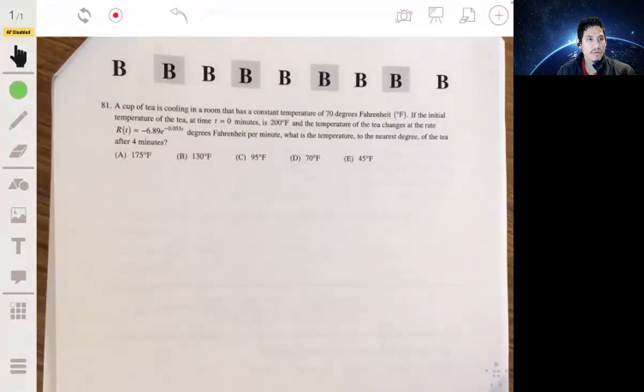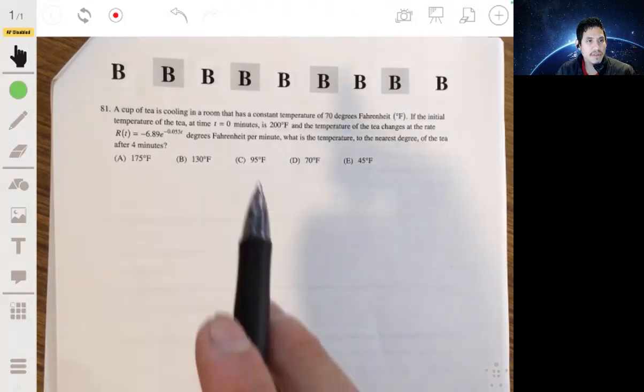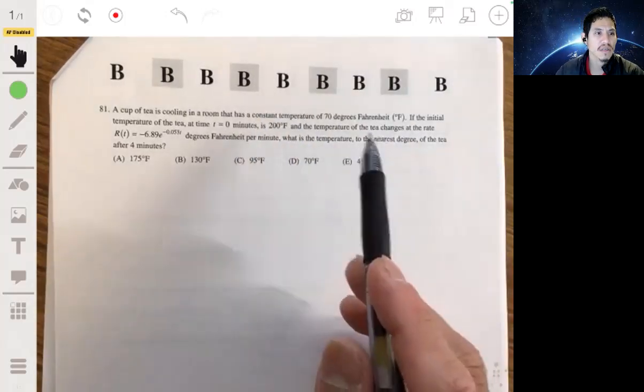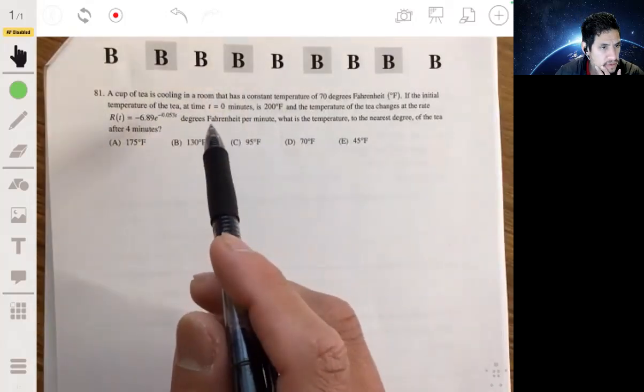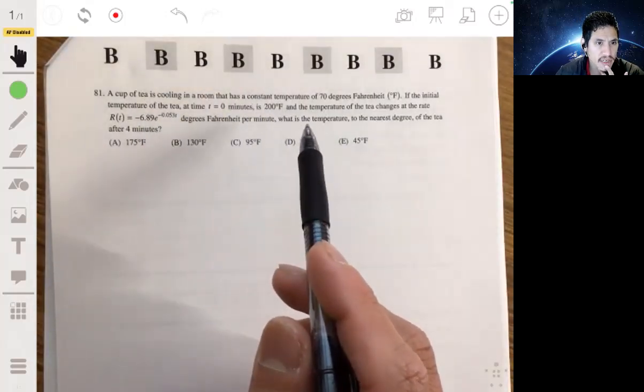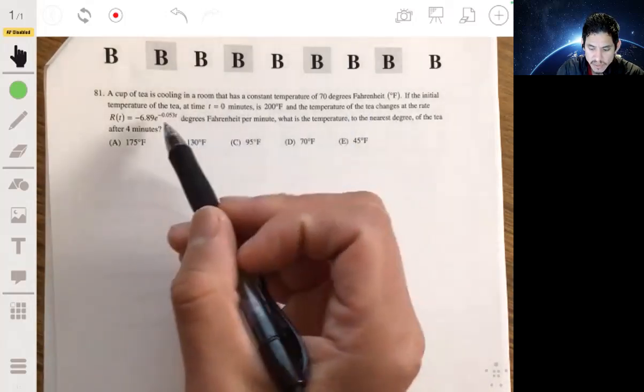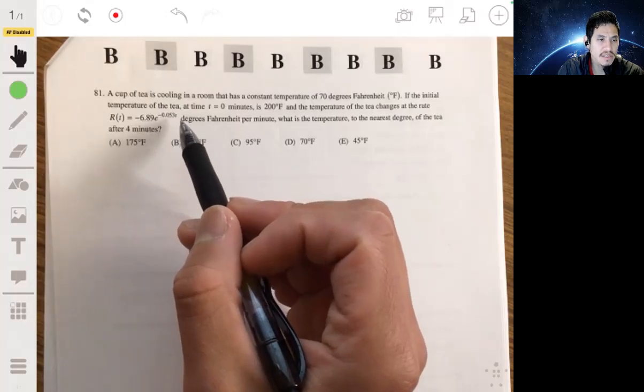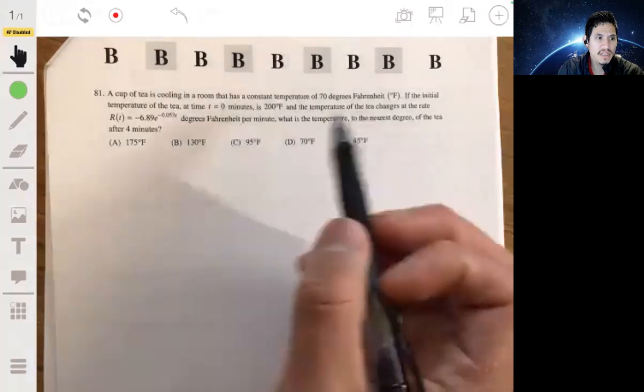Problem 81: a cup of tea in a room with constant temperature of 70 degrees Fahrenheit is cooling. The initial temperature at zero minutes is 200 degrees Fahrenheit, and the temperature changes at the rate of negative 6.89 e to the negative 0.053 t degrees Fahrenheit per minute. What is the temperature to the nearest degree at four minutes?